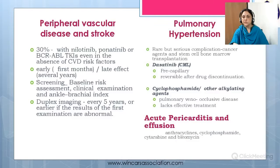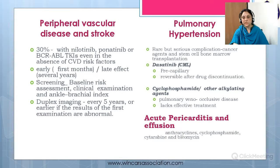Pulmonary hypertension is rare but a serious complication, especially with some cancer agents and in stem cell or bone marrow transplantation. Dasatinib, used in chronic myeloid leukemia, is associated with precapillary pulmonary hypertension, which is usually reversible after discontinuation of the drug. However, cyclophosphamide and other alkylating agents can cause pulmonary veno-occlusive disease resulting in pulmonary hypertension, which unfortunately lacks effective treatment.